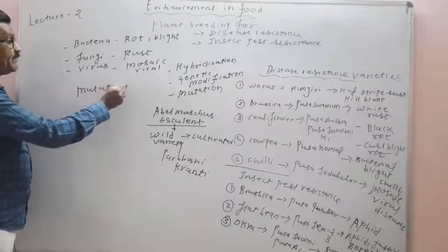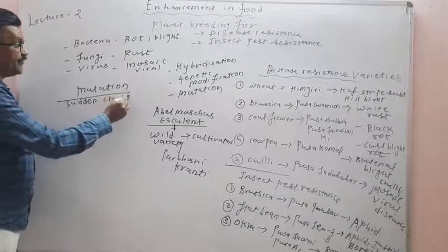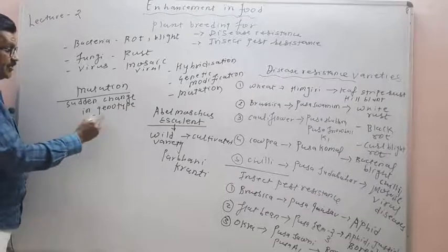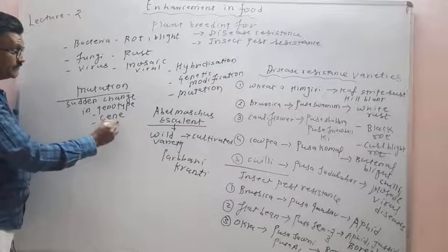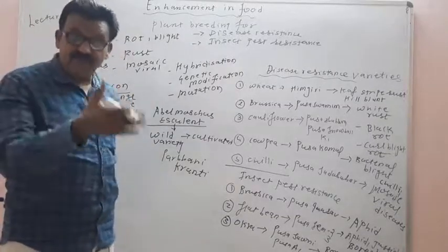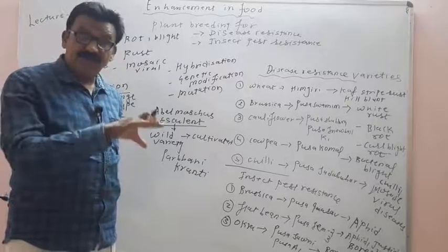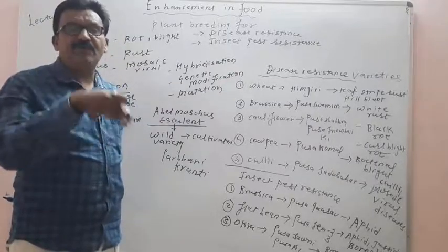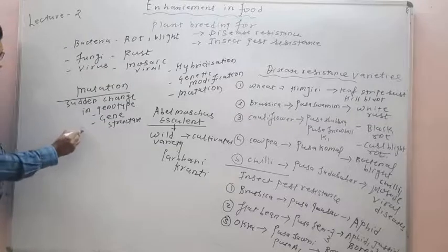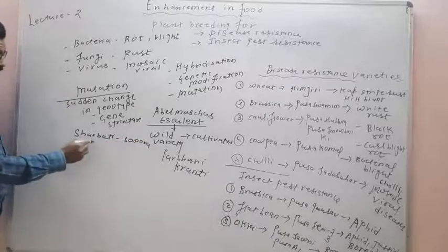Mutation means a sudden change in genotype — a sudden change in the gene structure. Desirable mutations can be induced by using chemicals and gamma radiations. Dr. M.S. Swaminathan developed the Sharbati Sonora wheat variety by using gamma radiations.